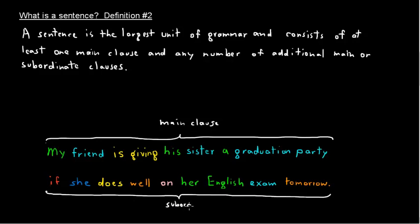So this particular sentence has one main clause—it has to have at least one—and in this case, it has a subordinate clause.